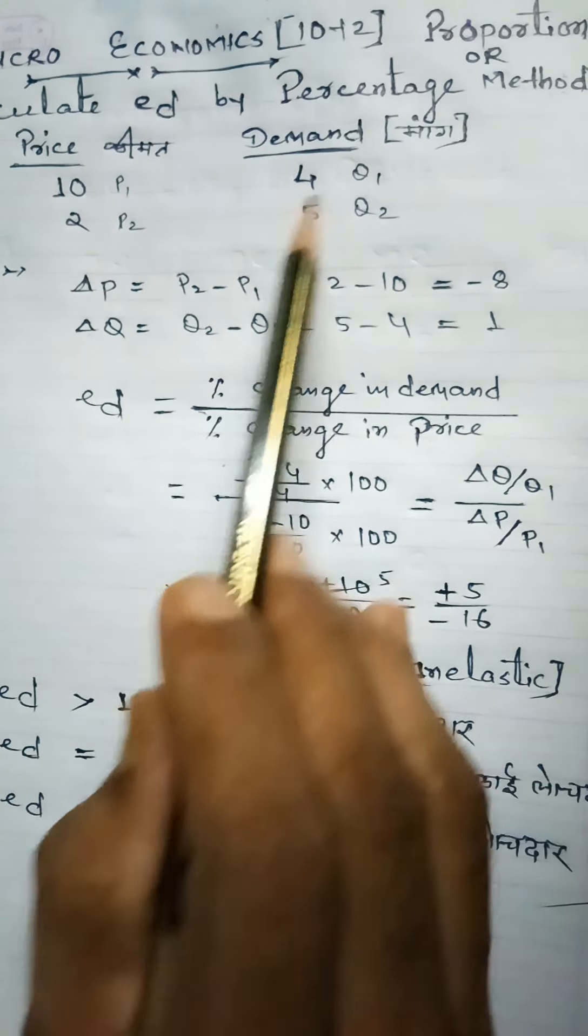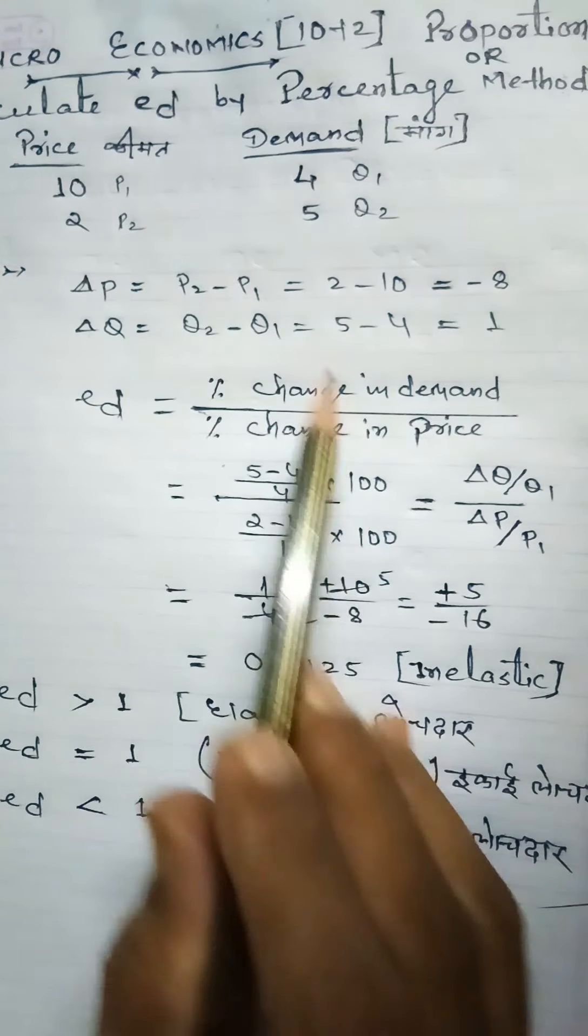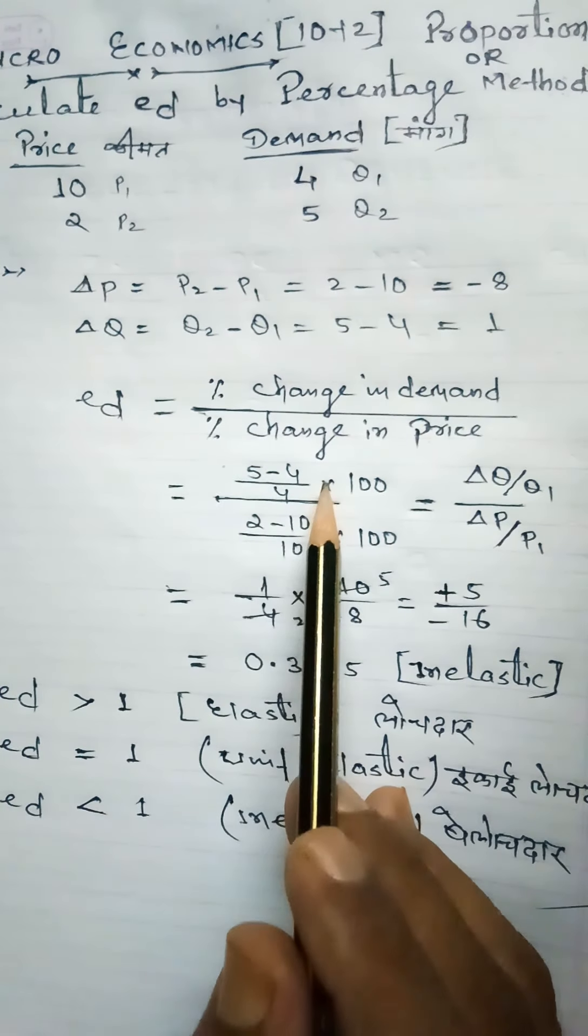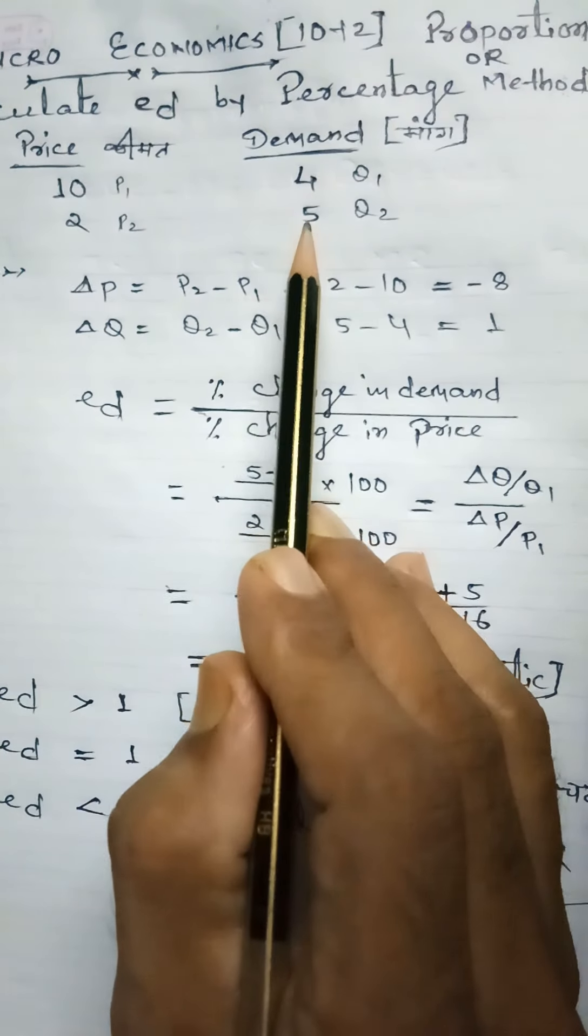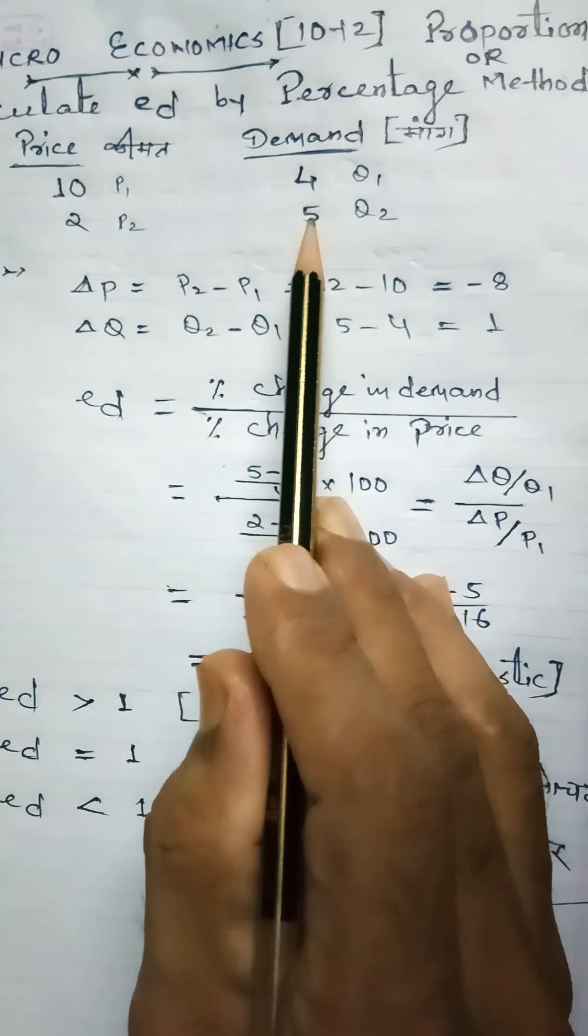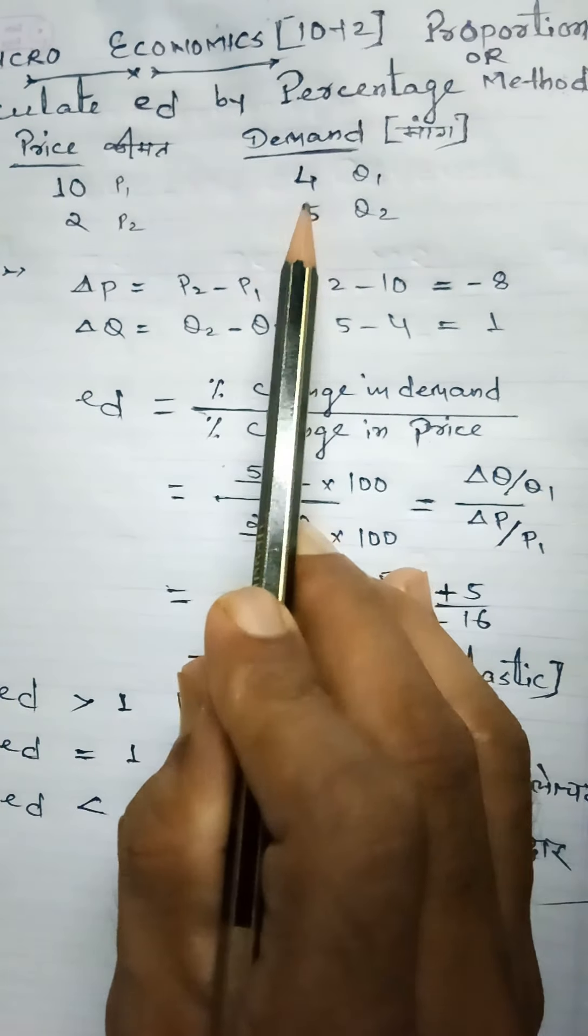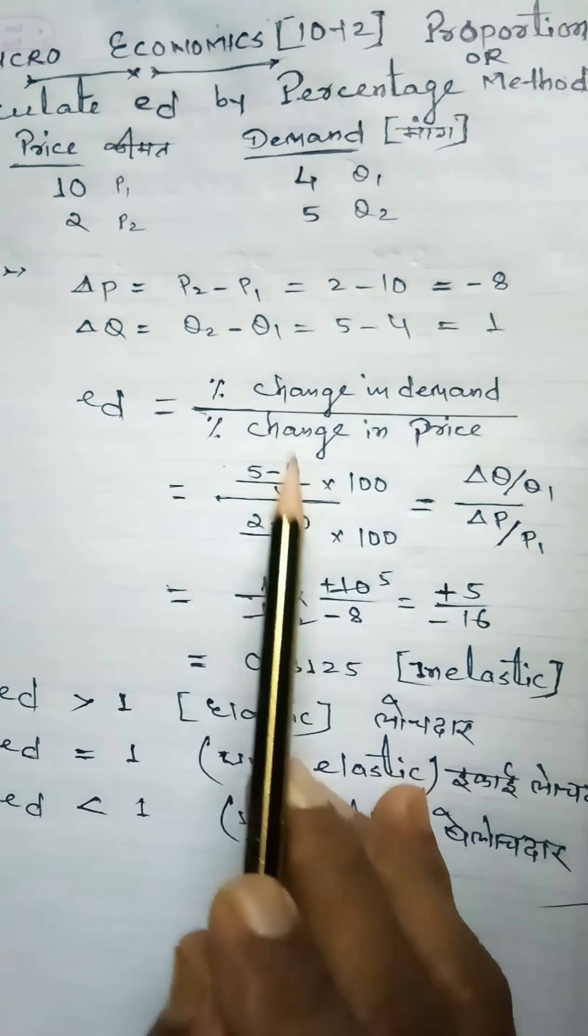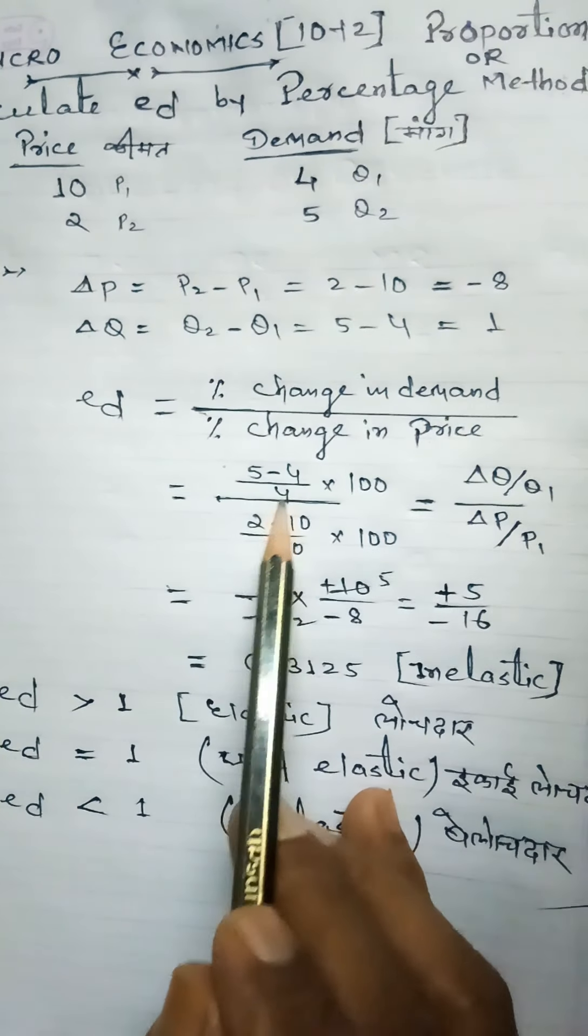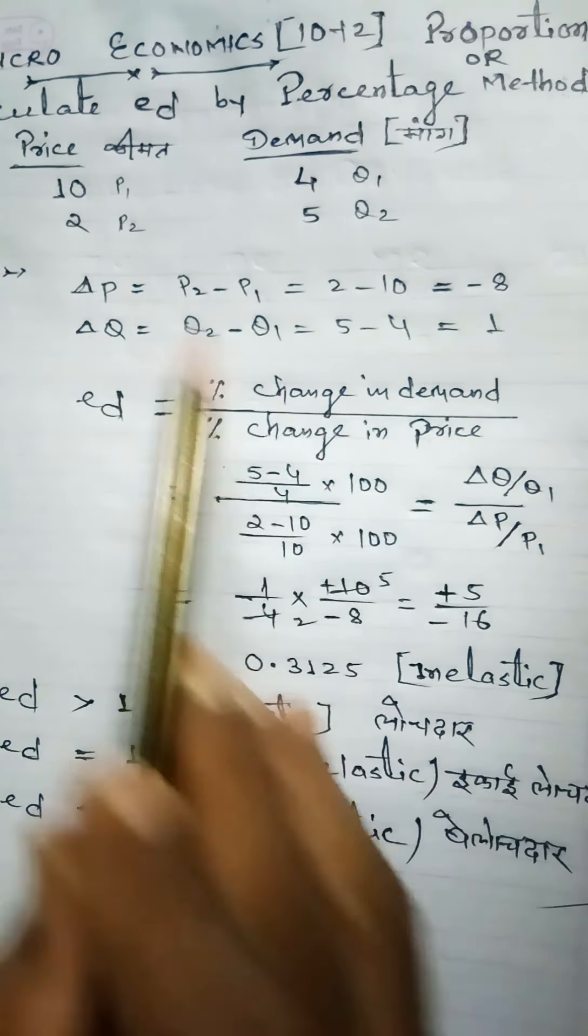5 minus 4, see carefully. Following percentage method, we can work with this by using 100. So how do we solve this? 5 minus 4: if demand changes from 4, it's divided by 4 times 100. Similarly,